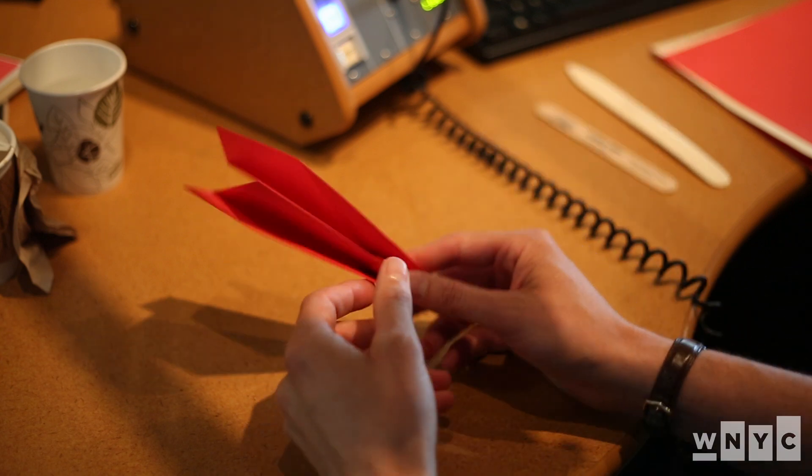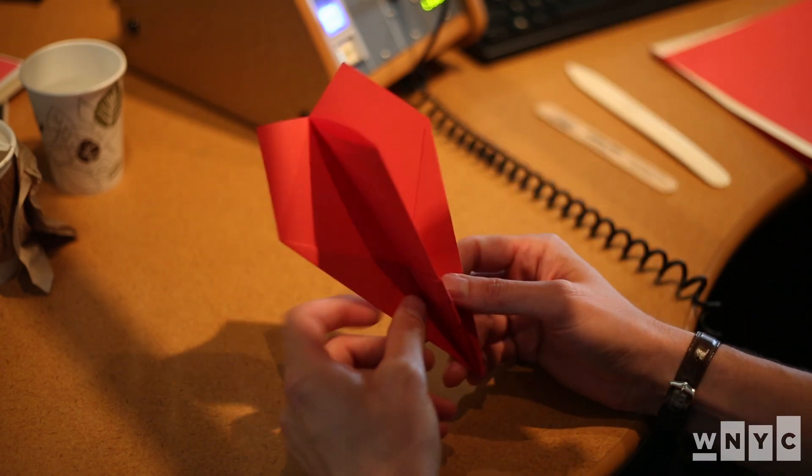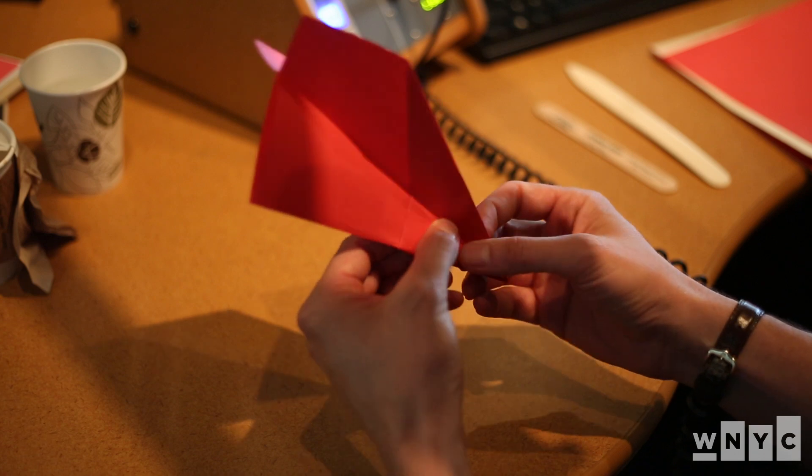So the final step now is look at your wings. You want to make sure that your wings have what's called a dihedral angle.